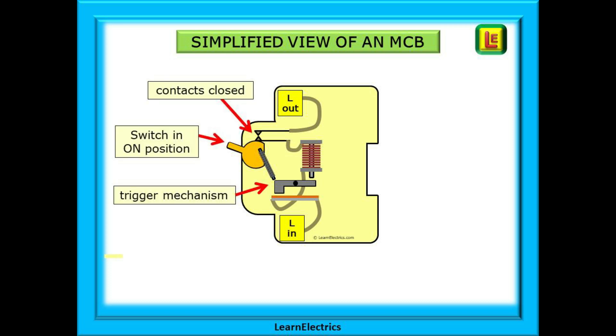In normal operation with the switch in the on position the contacts are closed making a continuous path and allowing current to flow through the MCB. The trigger mechanism is in a reset and balanced state.